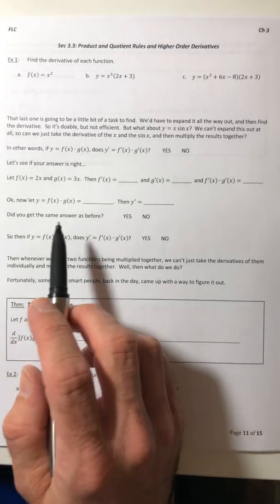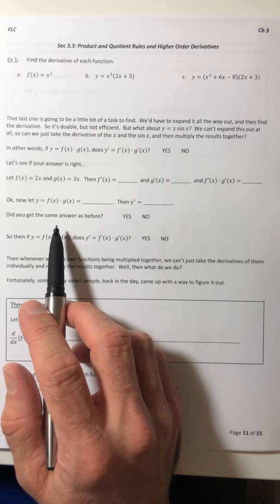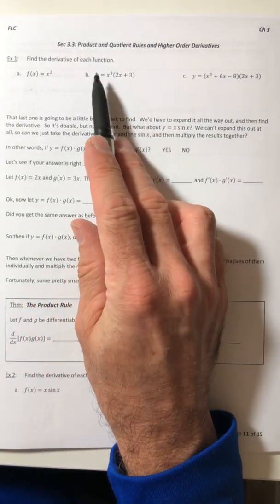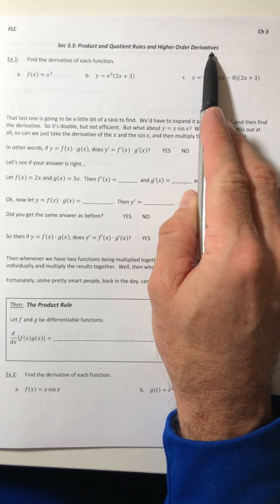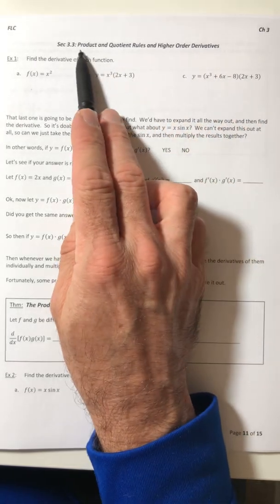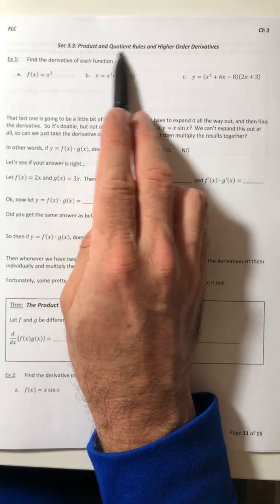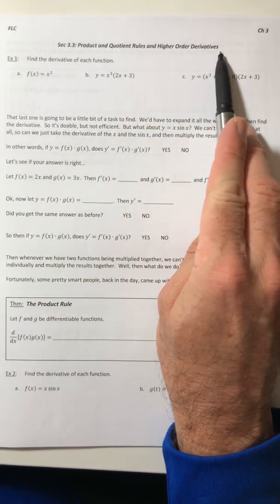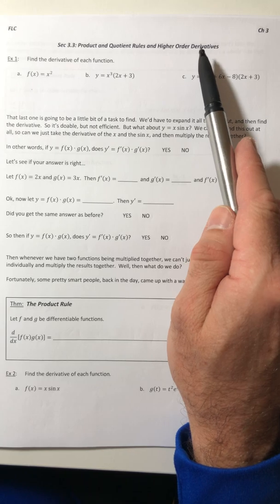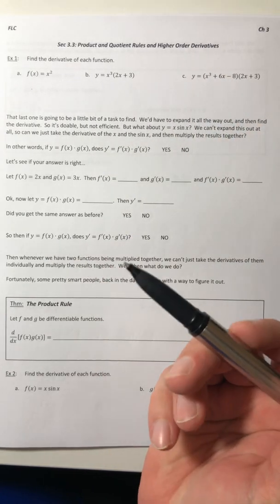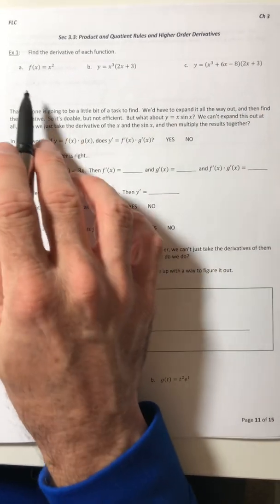Welcome back campers. So let's go ahead and start section 3.3. We're going to be looking at the product and quotient rules and higher order derivatives. So we're going to look at these two rules first and at the end we'll talk about higher order derivatives. Sounds kind of scary, doesn't it? It's actually not that bad. It sounds worse than it really is. Okay, so let's go ahead and start with these.